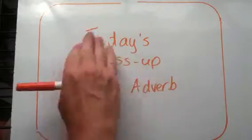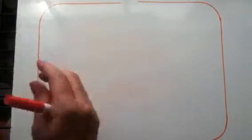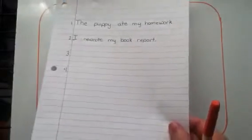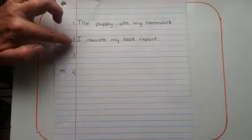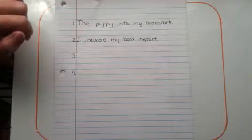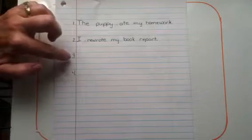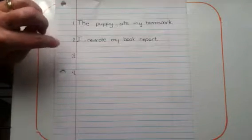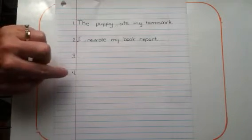Okay, now I want you to take out a piece of paper and set it up just like this. Two lines, then write number one and then you'll write this sentence. Two lines, number two, and you'll write this sentence. Two lines, number three, and then you're going to come up with a sentence of your own. Two more lines, number four, and you'll come up with a different sentence of your own. Go ahead and pause while you're doing that.